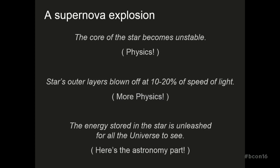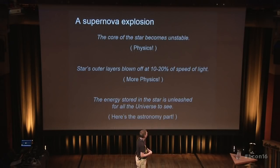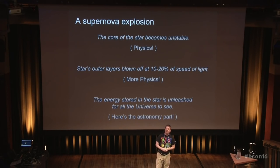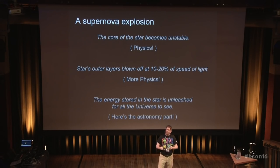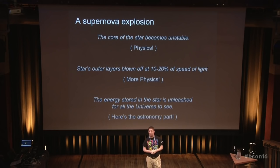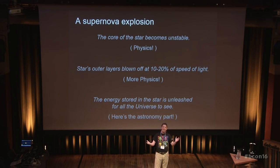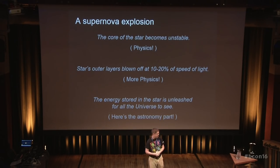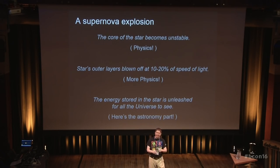Without getting into the details of the physics, the short story is that the core collapses and becomes unstable. The outer layers bounce off the core and blast outward at somewhere between 10 and 20 percent of the speed of light. We're talking many times the mass of the sun being thrown at incredible velocities — enormous amounts of energy are being released. We can see that from great distances across the universe. That's the astronomy part; the rest of it is the physics.